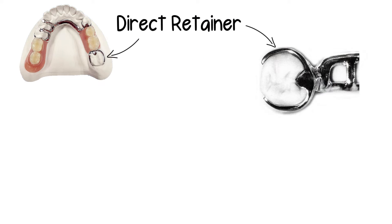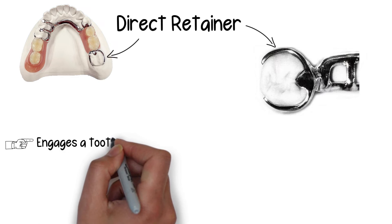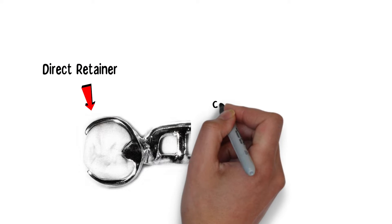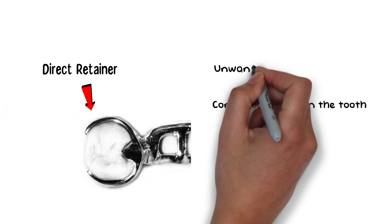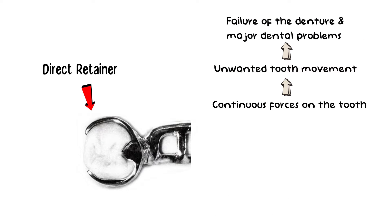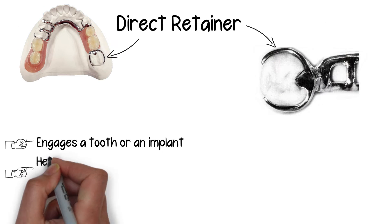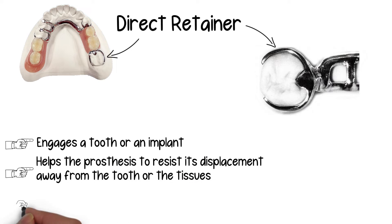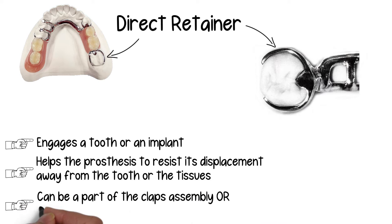The next part is the direct retainer. By definition, a direct retainer is the part of the prosthesis that engages an abutment tooth, or in some cases an implant. The definition of engaging a tooth is very crucial — it does not mean the direct retainer applies continuous force on the tooth, as this could lead to unwanted orthodontic movement and eventual failure of the denture. Instead, the direct retainer keeps the denture in place so it does not fall off during talking or mastication, essentially helping the prosthesis to resist displacement away from the tooth or tissues. Direct retainers can be part of the clasp assembly or in the form of an attachment.